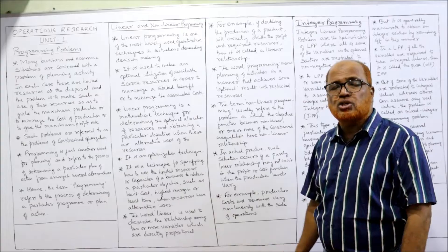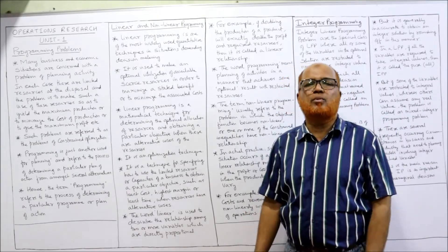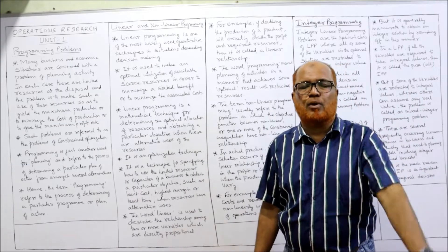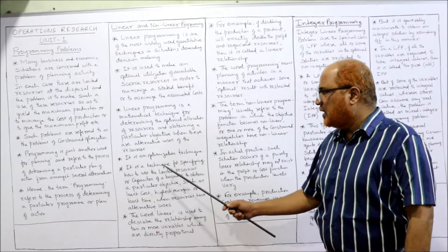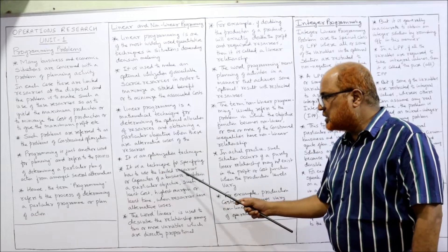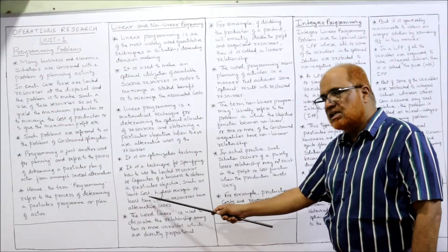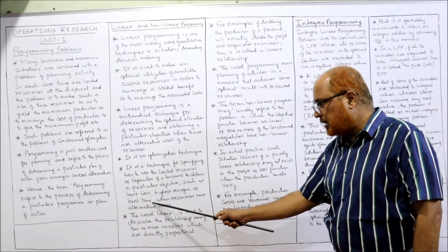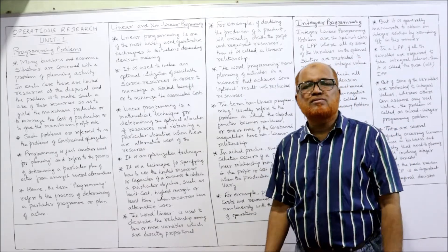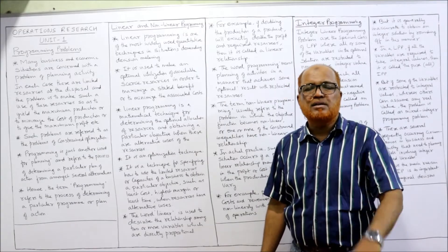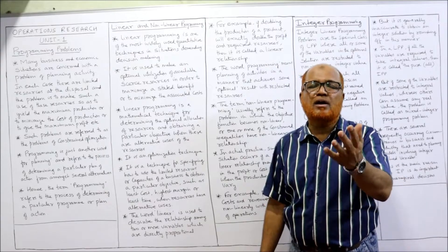It is an optimization technique. It is called optimization because by applying linear programming we are optimizing the problem — finding the better solution. It is a technique for specifying how to use the limited resources or capacities of a business to obtain a particular objective, such as least cost, highest margin, or least time, when resources have alternative uses.